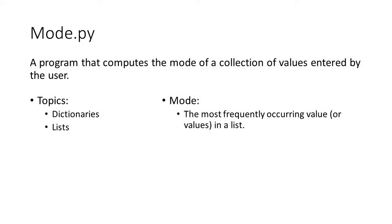In this video I'm going to demonstrate Python's dictionary data structure by creating a program that computes the mode for a list of values entered by the user. The mode of a list is the value that occurs with greatest frequency. If a list has two or more values that occur with greatest frequency then it has multiple modes. An empty list does not have a mode.